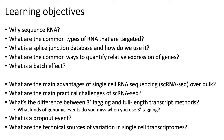More specifically, classic single-cell RNA sequencing protocols can be broadly divided into two categories: one called 3-prime tagging, and the other called full-length transcript methods. It's important to understand the broad difference between how these two types of methods work and their relative advantages and disadvantages.